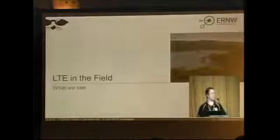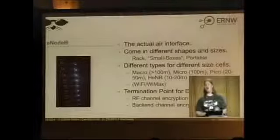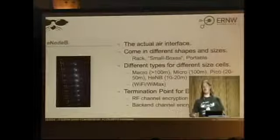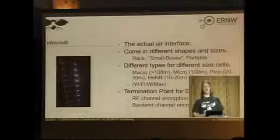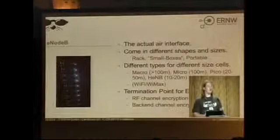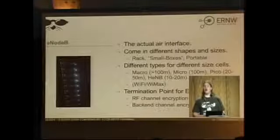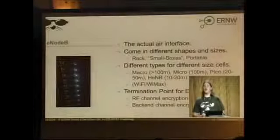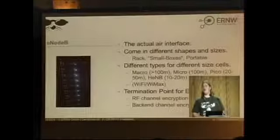Now, LTE in the field. What do you actually see out there? The only things you can really see are antennas and the eNodeB. The eNodeB is the actual air interface — it has a network cable on one side and the antenna on the other. They come in quite a few different shapes and sizes: small laptop-sized boxes up on a cell mast, ginormous 19-inch rack systems, or even portable eNodeBs. During our research we actually found approaches to an eNodeB that could be carried in a backpack for tactical purposes in the field.